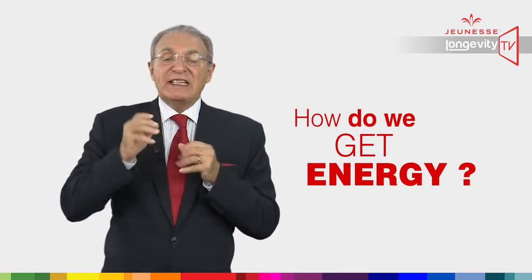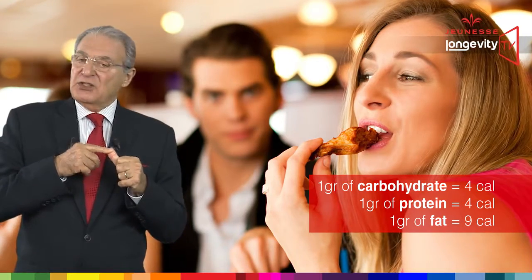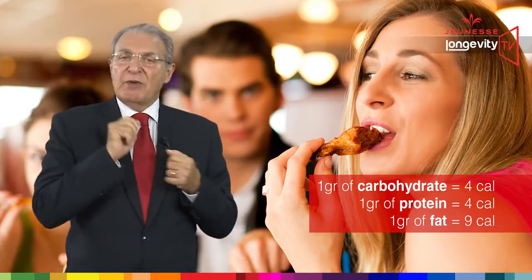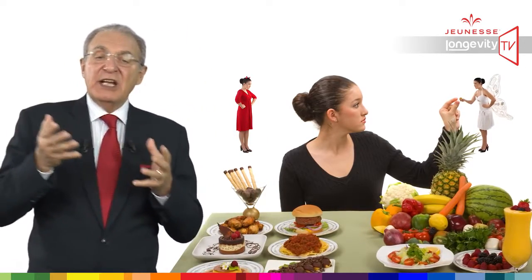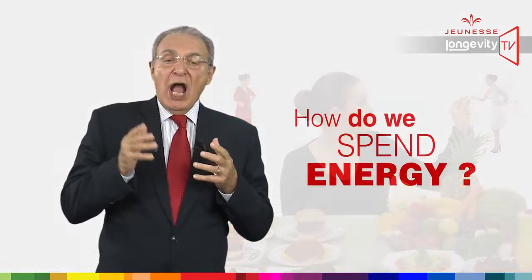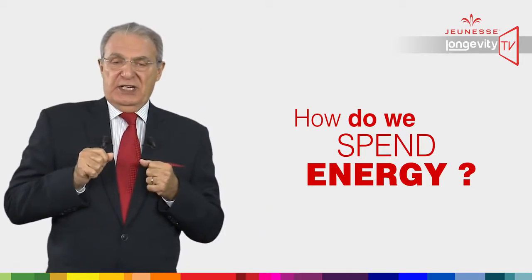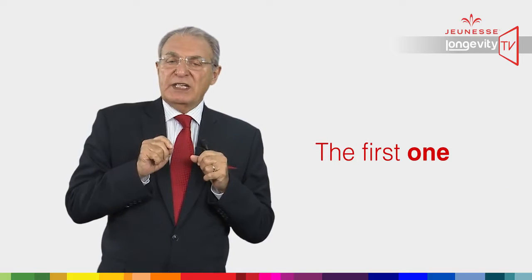So how do we get energy? The body gets energy only from food. One gram of carbohydrate releases four calories — the same for protein — but one gram of fat releases nine calories. So it all depends on how much you eat and what kind of food you eat, whether it is rich in fat, protein, or sugars.